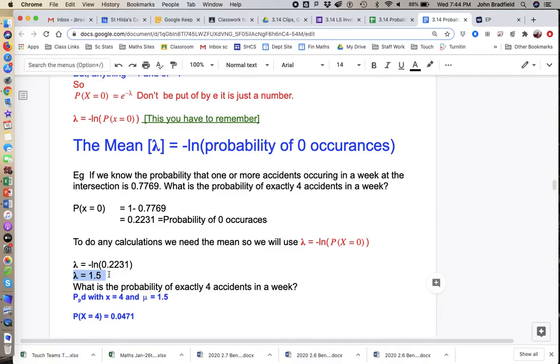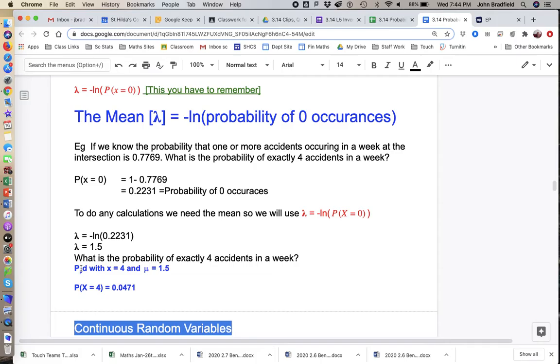Once we have that mean, we can answer the question, what is the probability of exactly four? Well, that's okay. We go to our calculator, the PPD, because it's a particular value. We see x equal to four accidents, and mu equal to 1.5.